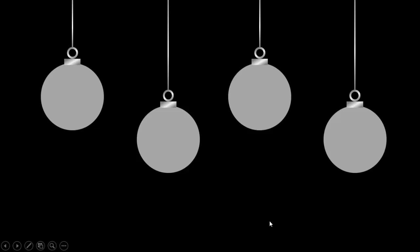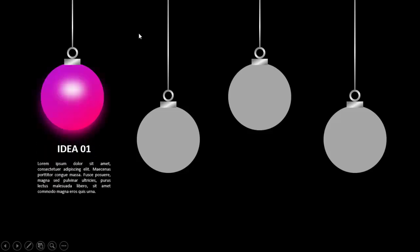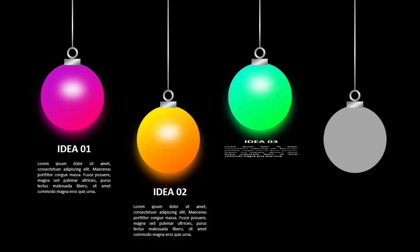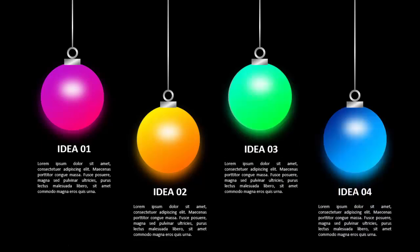In today's tutorial I'm going to show you how to create four idea bulbs glowing effect options in PowerPoint. I've created these four bulbs, and when I click anywhere, the light comes and it glows with a purple and pink gradient fill. You can add your title and detailed text. When I click, it will show idea two with a different color combination, then idea three and idea four.